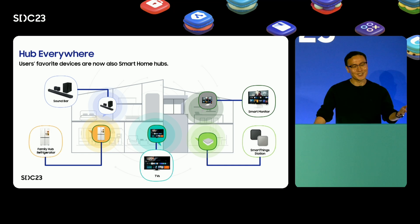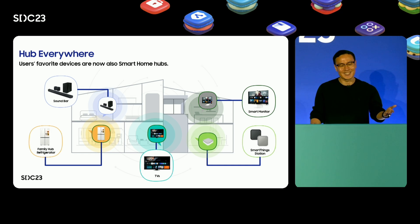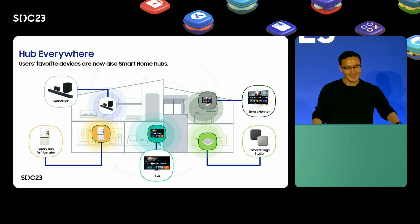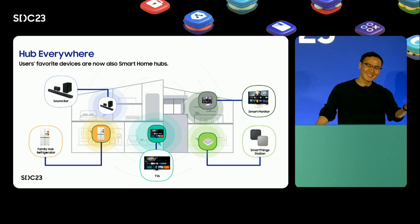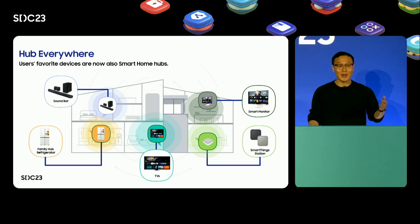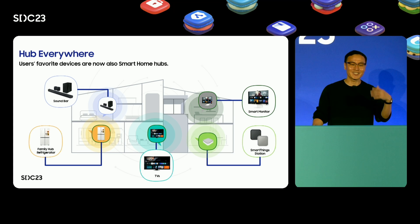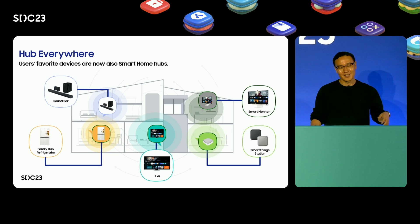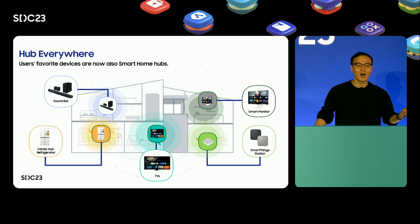Our hub everywhere strategy helps make sure that there is a Matter controller in even more homes. Samsung has the largest number of devices that can act as Matter controllers — our TVs, our family of smart monitors, our SmartThings Station, our new soundbar, and of course our original hubs all act as Matter controllers.